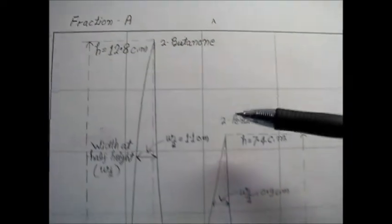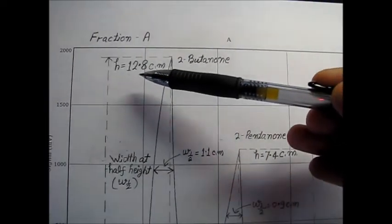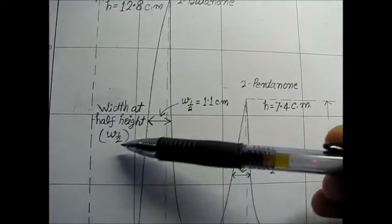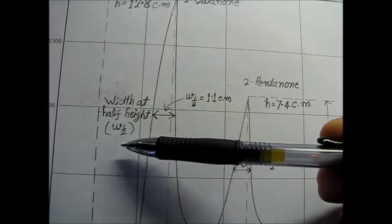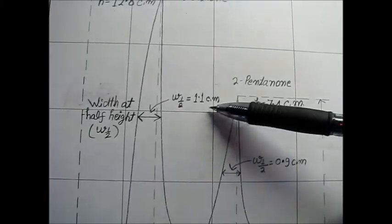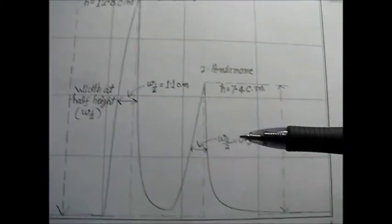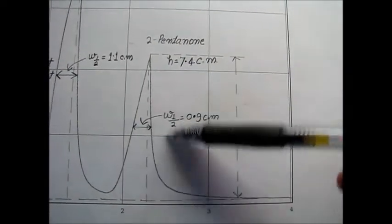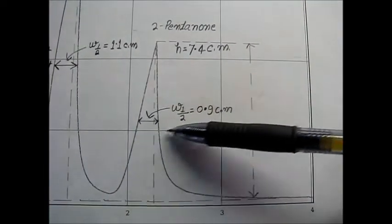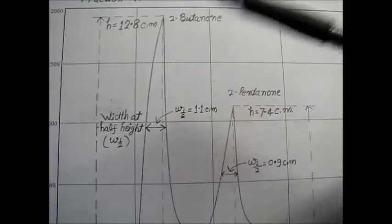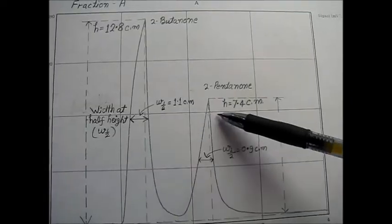The first peak is for 2-butanone, second peak is for 2-pentanone. So first peak has height 12.8 cm and if we take the half of the height which is width at half height which is called W half, I measured this width which is 1.1 cm. Same way we got the data for the 2-pentanone second peak height is 7.4 cm and half width is 0.9 cm. So from these two height and half width once you will multiply then you will get the data for the area of this peak. And then using that two area of this peak you can calculate the percentage composition of each peak from fraction A.